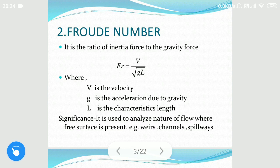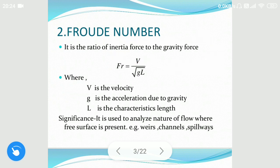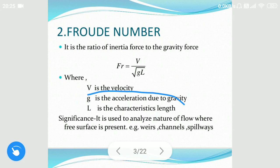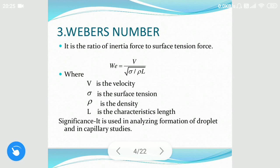The second is Froude's number. Froude's number is the ratio of inertial force to gravity force. It is given as V divided by the square root of G·L, where V is the velocity of the fluid, G is the acceleration due to gravity, and L is the characteristic length. Froude number is generally used to analyze the nature of fluid flow in weirs, channels, spillways, etc.